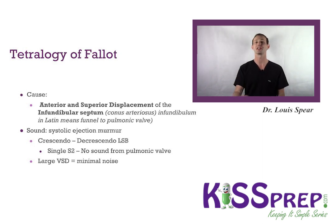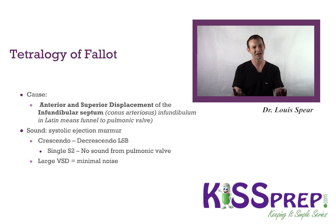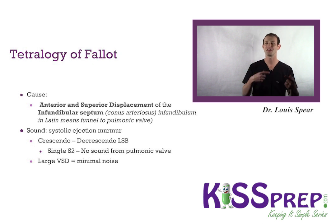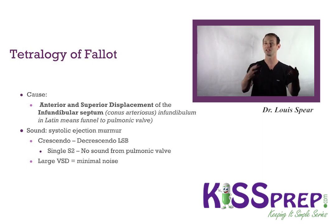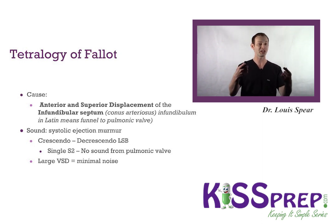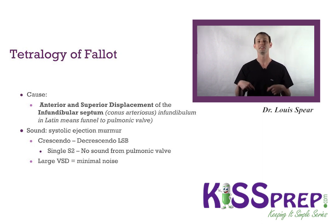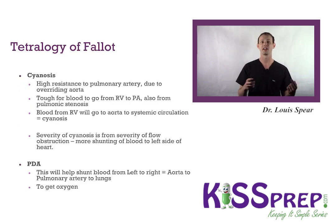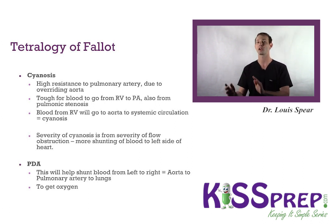There could be a single S2 because there's no sound from the pulmonic valve. There are different things you can hear in Tetralogy of Fallot because there are multiple issues happening — it can present as a VSD since that's one of the four components, or it can classically have its crescendo-decrescendo murmur at the left sternal border. The cyanosis is due to high resistance to the pulmonary artery because of the overriding aorta.